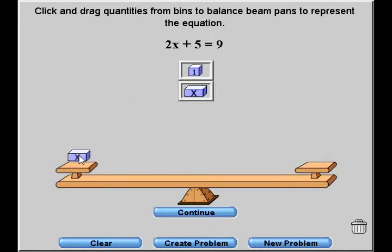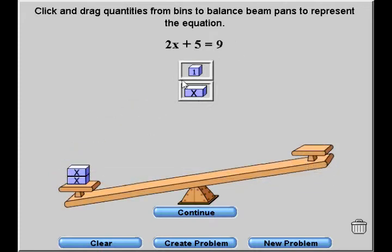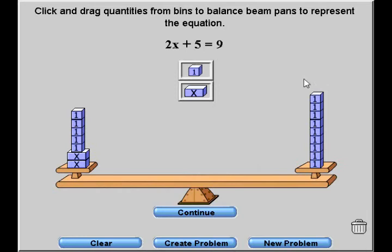So on the left side of the scale, we're going to place 2x boxes and 5 unit boxes. On the right side of the equation, we're going to place 9 unit boxes. As soon as we do that, we see that the scale does balance.